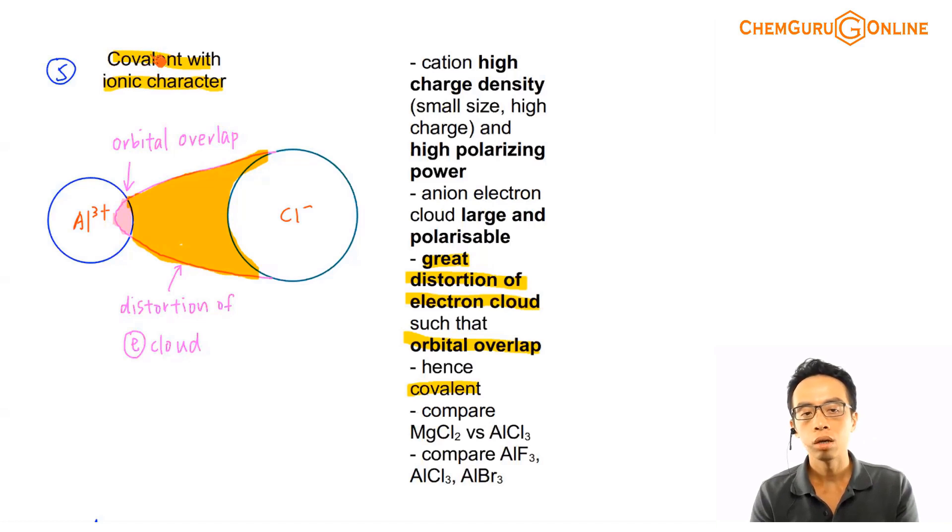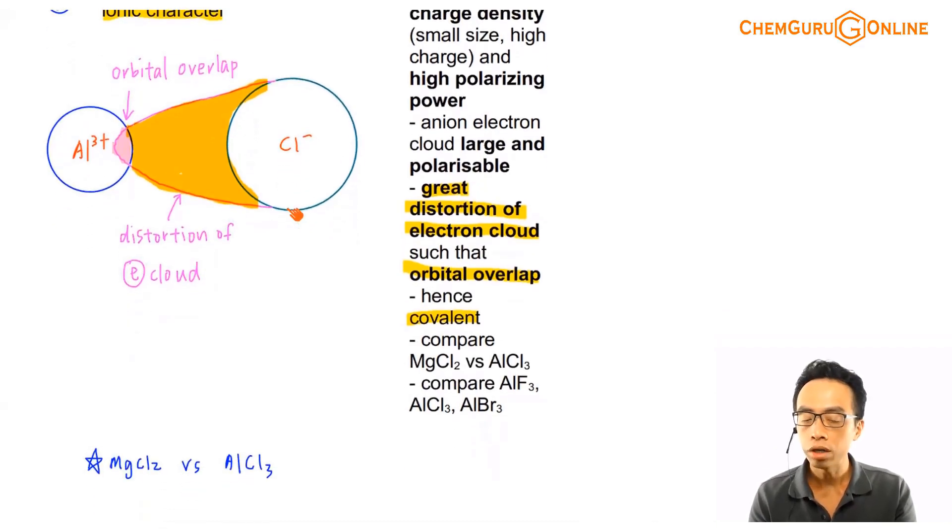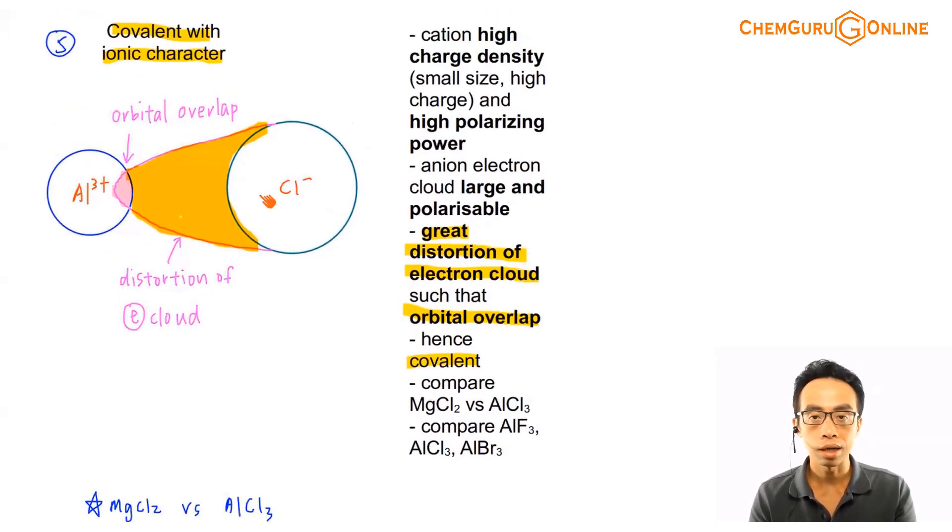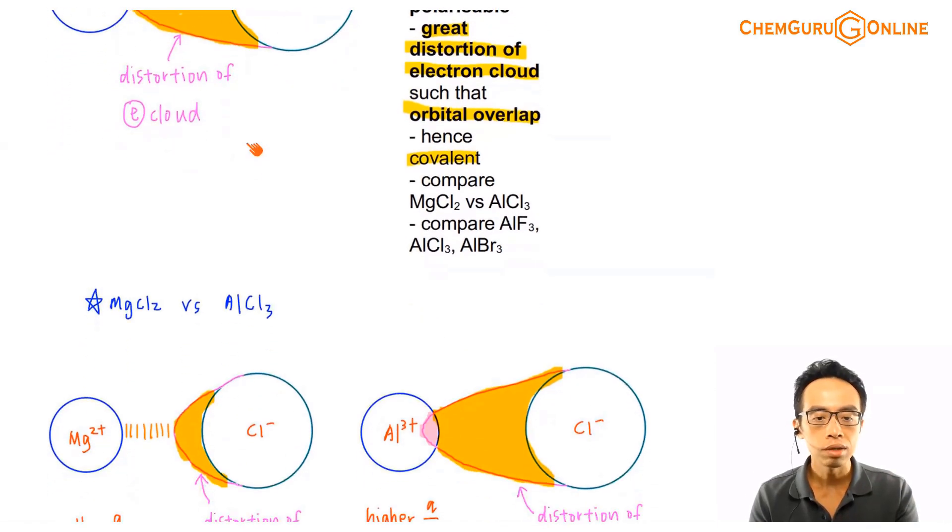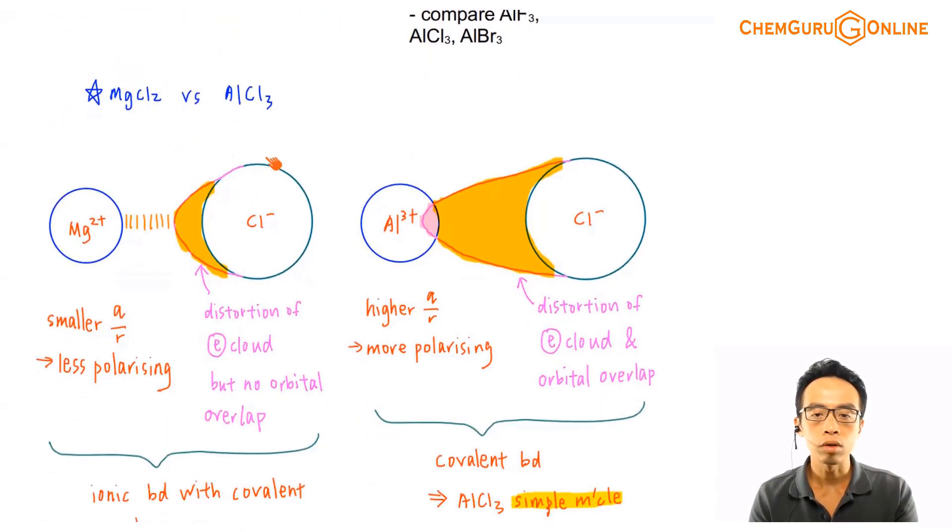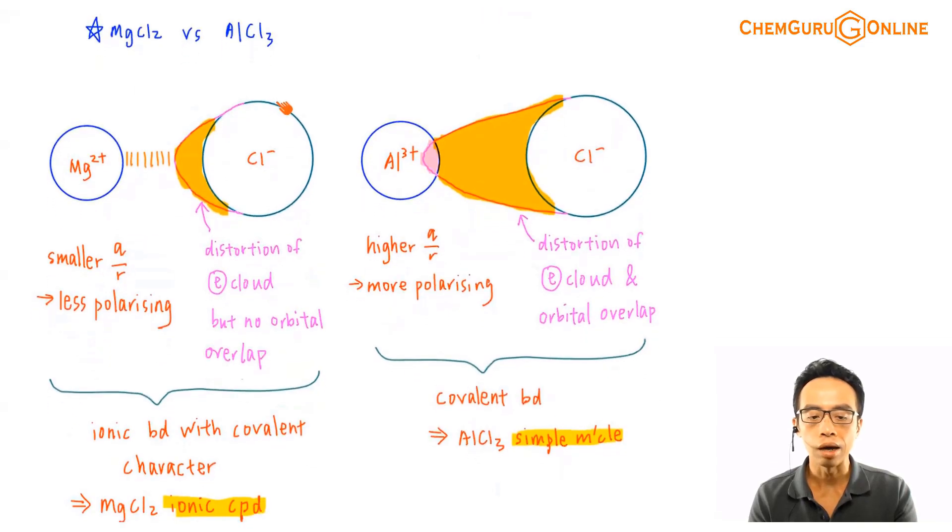That's why we say that this is a covalent bond with ionic character. Ionic character because Al will have a positive charge and Cl will be a minus charge. So this is officially a simple covalent compound with a bit of ionic character. Pretty interesting, and please remember this is a classic example. When you see AlCl3, please remember that this is a simple covalent compound. It is no longer an ionic compound.